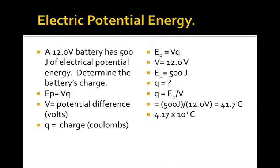Now electric potential energy, it's another type. Let's have a look at an example of that. A 12-volt battery has 500 joules of electrical potential energy. Determine the battery's charge. So the equation we use for electric potential is EP equals VQ, where V equals potential difference in volts, and Q equals the charge in coulombs. So we write out our equation as well as the variables we know, the voltage and the potential energy. And our unknown in this case is the charge, the coulombs.